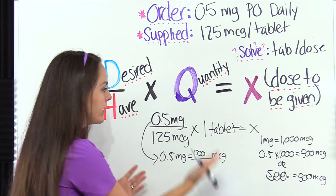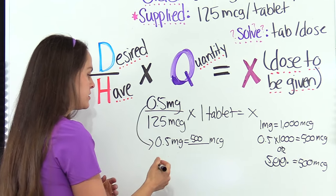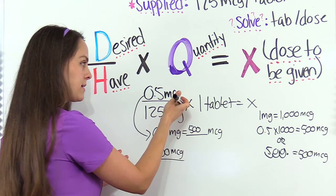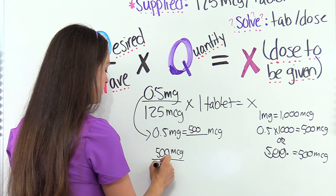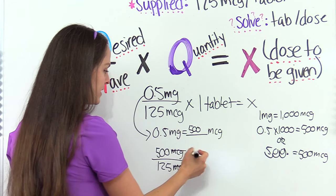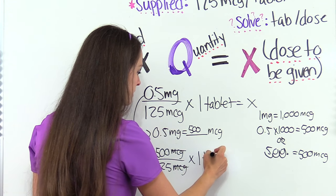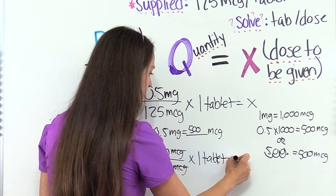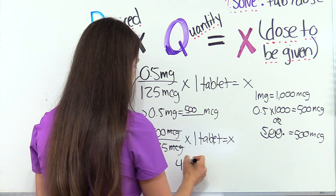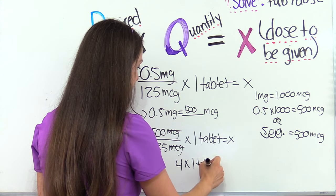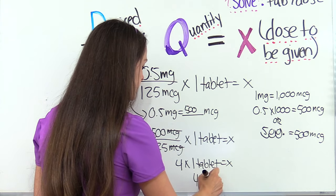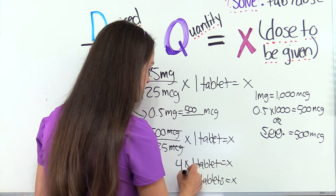Now we're ready to plug that converted information back into the formula and solve. We have 500 micrograms as our desired dose. On hand we have 125 micrograms — micrograms cancels out, so we're ready to solve. We multiply by one tablet. 500 divided by 125 is four, times one tablet. Four times one is four. So our answer is four tablets to administer to that patient.